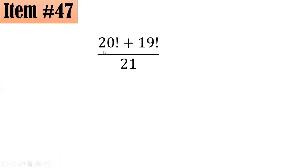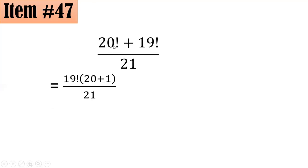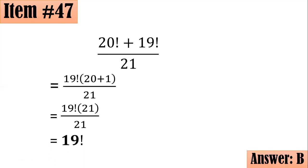Remember that 20 factorial means 20 times 19 times 18 times 17 all the way to 1, and 19 factorial means 19 times 18 times 17 all the way to 1. When you have two or more factorials, the smallest factorial is their GCF. So in the numerator, factor out 19 factorial: 20 factorial divided by 19 factorial gives 20, plus 1. That gives 21 inside the parenthesis, which cancels with the 21 in the denominator. Hence, you get 19 factorial. Letter B.